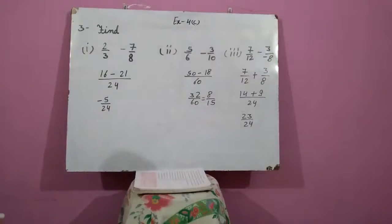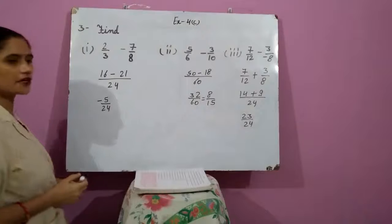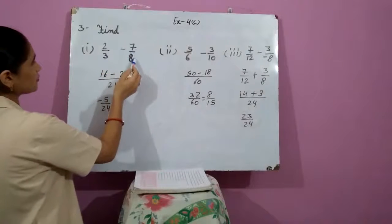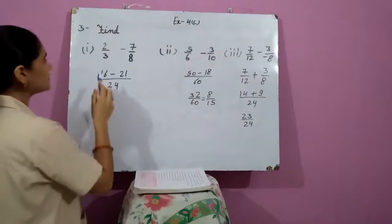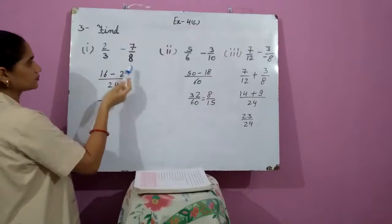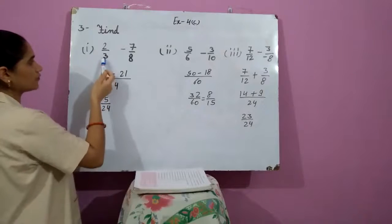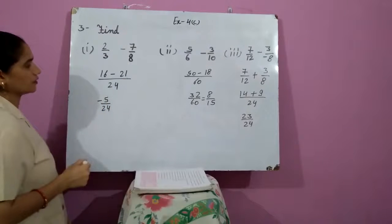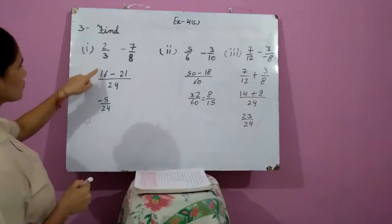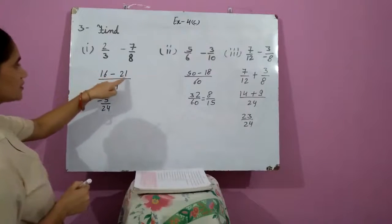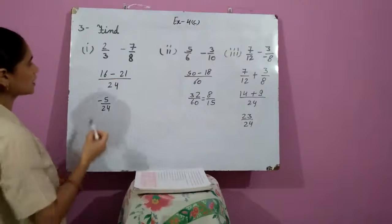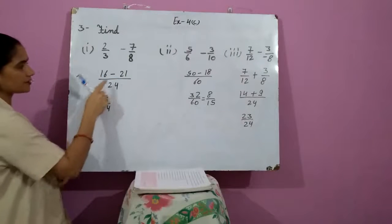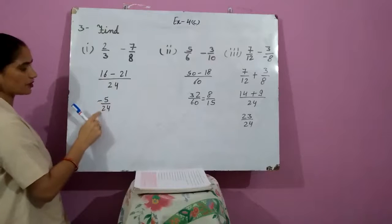Question number 3, first part: 2 upon 3 minus 7 upon 8. The LCM of 3 and 8 is 24. After the calculation we get 6 multiplied by 1 minus 3 multiplied by 7, which is 16 minus 21. After subtraction we get minus 5 upon 24.